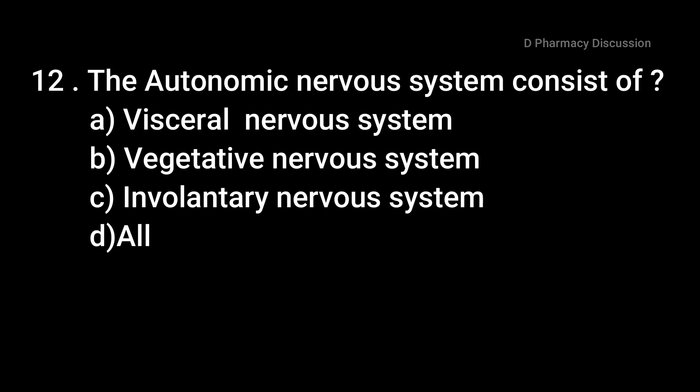Question number twelve: the autonomic nervous system consists of — option A: visceral, B: vegetative, C: involuntary nervous system, and option D: all. The correct answer is option D, all. That means the autonomic nervous system consists of the visceral, vegetative, and the involuntary nervous system.